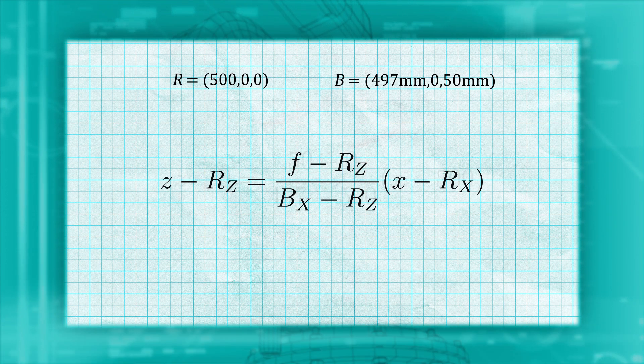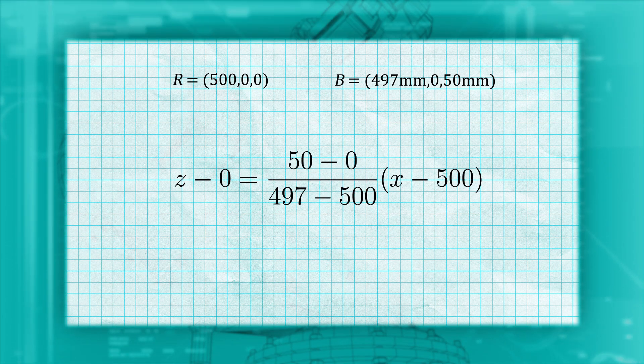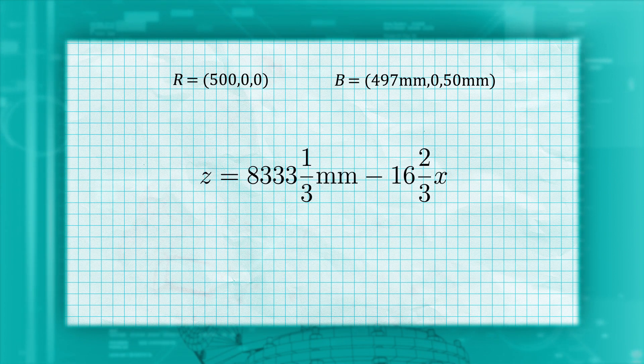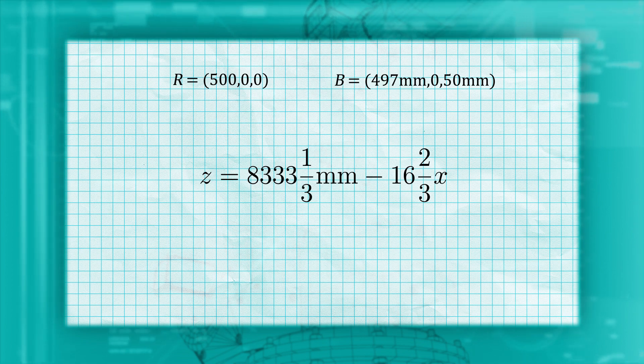We substitute in the values and simplify, and we get our final equation: Z equals 8,333 and one-third millimeters minus 16 and two-thirds times X.